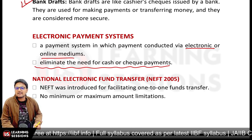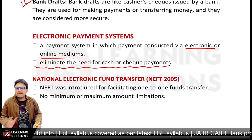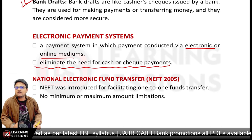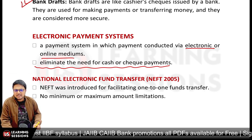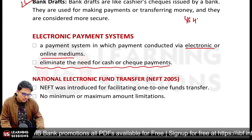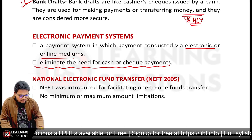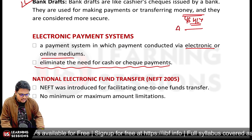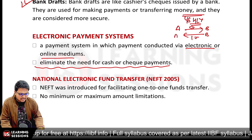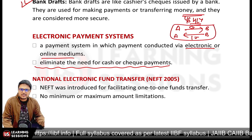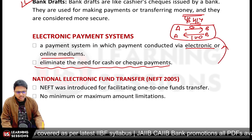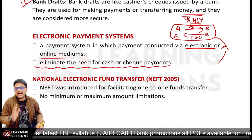First is NEFT — National Electronic Fund Transfer — which came in 2005. NEFT was introduced to facilitate one-to-one fund transfers, but there is netting of transactions. There are 48 half-hourly batches. In each half hour, transactions are netted. For example, if A owes B Rs. 50 and B owes A Rs. 100 in the same batch, the net transaction is B paying Rs. 50 to A. This netting is done in half-hourly batches and then the amount is transferred.